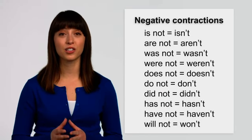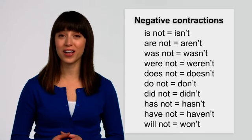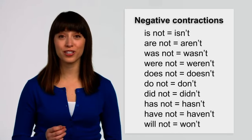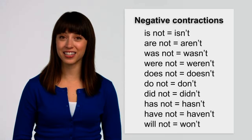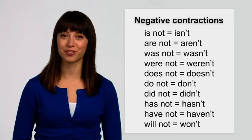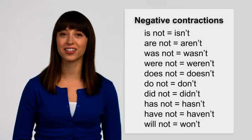We often contract the helping verb with not. So we say isn't, aren't, wasn't, weren't, doesn't, don't, didn't, hasn't, and haven't. The negative contraction for will not is won't.